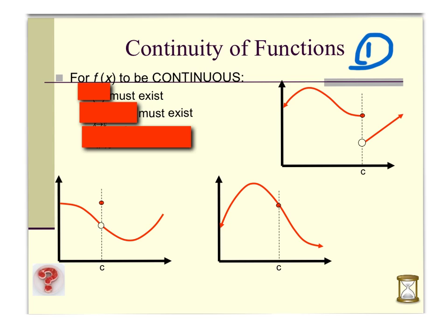Looking at problem one, which has a step discontinuity or jump: if we use the idea of limits and trace from both sides of the graph, getting closer and closer to x equals c, the left-hand limit exists and the right-hand limit exists, but they're not equal to one another. So the limit doesn't exist. That step discontinuity reveals a key insight: in order for a function to be continuous, the limit must exist.